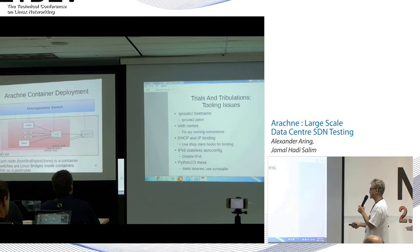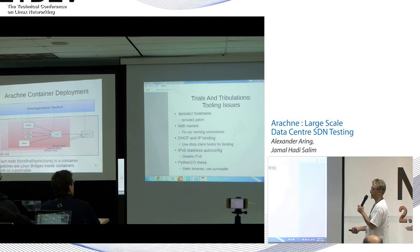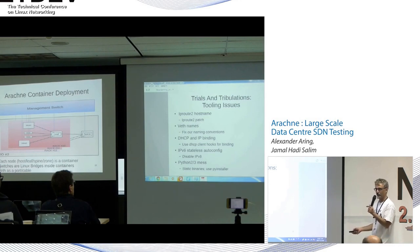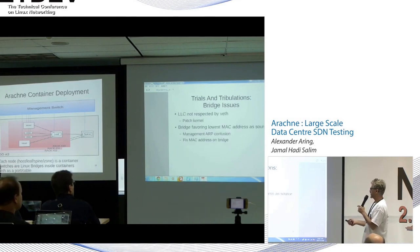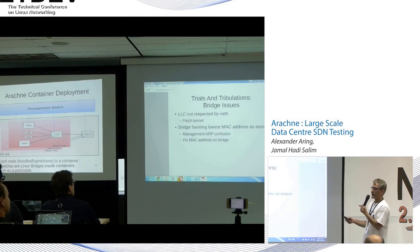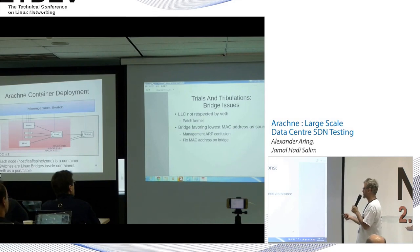DHCP and IP binding was a challenge. We initially started by having the management port for each container hook up to DHCP. But we had some application trying to bind to an IP address that didn't exist yet. We ended up using DHCP client hooks for binding. IPv6 stateless auto-config was causing us tons of problems — as soon as you bring up a port, it starts sending neighbor discovery. We ended up disabling it before we realized we just needed STP.